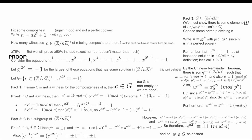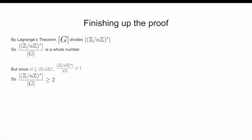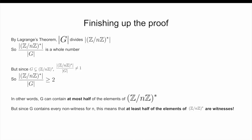Now that we have proved our three facts, we can use them to show that at least half of elements in Z/NZ* are witnesses. By Lagrange's theorem, the order of G divides the order of Z/NZ*, so the order of Z/NZ* over the order of G is a whole number. But since G is strictly smaller than Z/NZ*, this number cannot be equal to 1, so since it's a whole number, it must be at least 2. Therefore, G contains at most half the elements in Z/NZ*. However, since every non-witness for N being composite is contained in G, this implies that at most half the elements of Z/NZ* are non-witnesses. So therefore, at least half the elements of Z/NZ* are witnesses, as desired, and the result is proven.